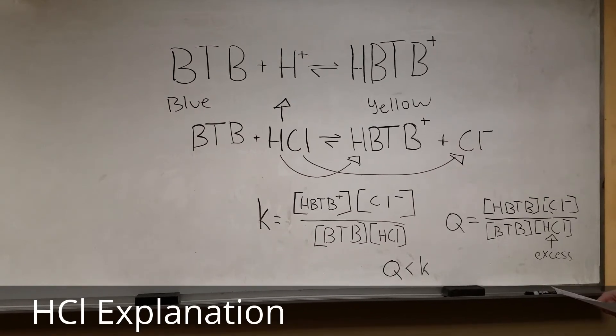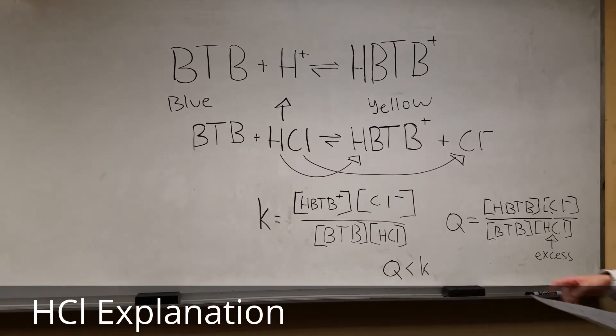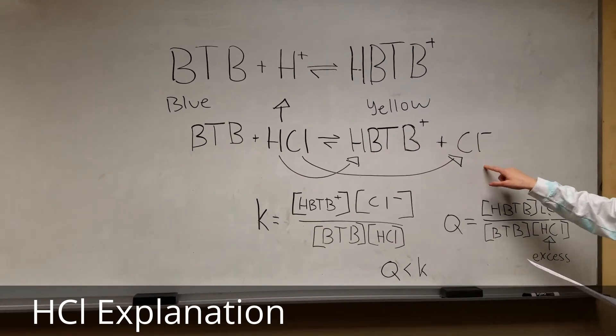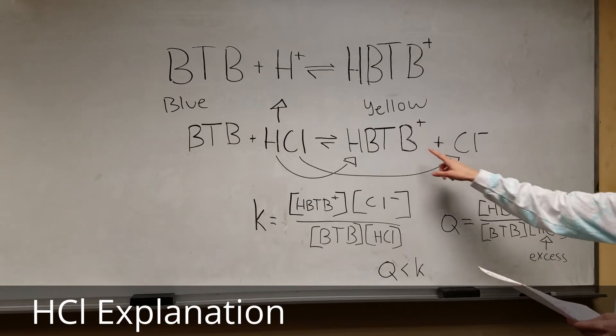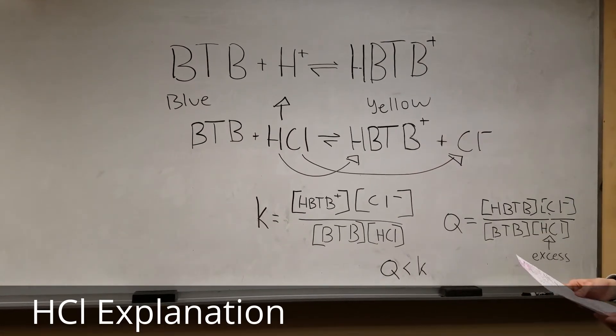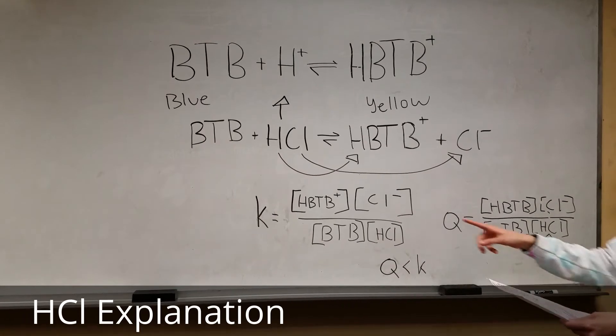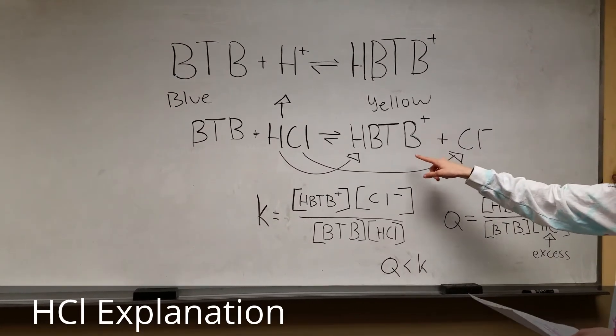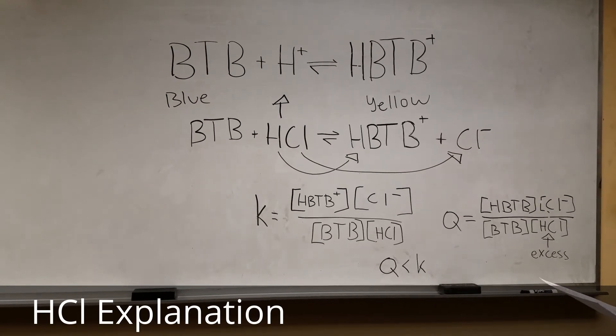Since HCl is a strong acid, it dissociates completely into H+ and Cl-, where the H+ bonds with BTB and turns yellow. Adding more HCl would cause the equation to shift more to the right and create more HBTB to balance out the stress.